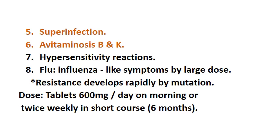Unfortunately, resistance development by rifampicin is very rapid due to mutation, so we should restrict its use to the aforementioned indications. The dose is 600 mg daily in the morning, or similar to INH, sometimes given twice weekly in short courses of even up to six months under observation and follow-up, with many conditions fulfilled to achieve this short-term therapy.